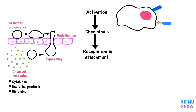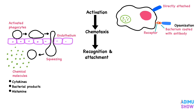The next step is recognition and attachment. Bacteria attach directly to the neutrophil membrane via receptors on the neutrophils. Phagocytosis is enhanced and made more efficient when the surface of the pathogens is coated with complement products or antibody. This is called opsonization.